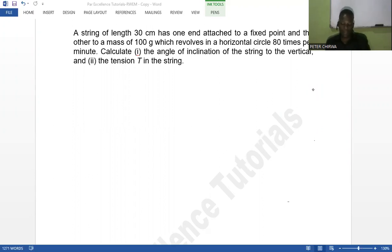The question says a string of 30 centimeter has one end attached to a fixed point and the other to a mass of 100 grams, which revolves in a horizontal circle 80 times per minute. Calculate the angle of inclination of the string to the vertical and calculate the tension in the string.